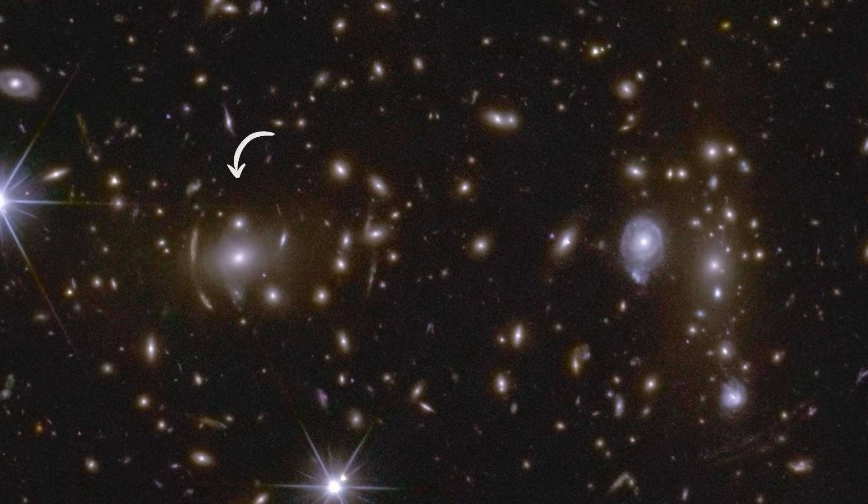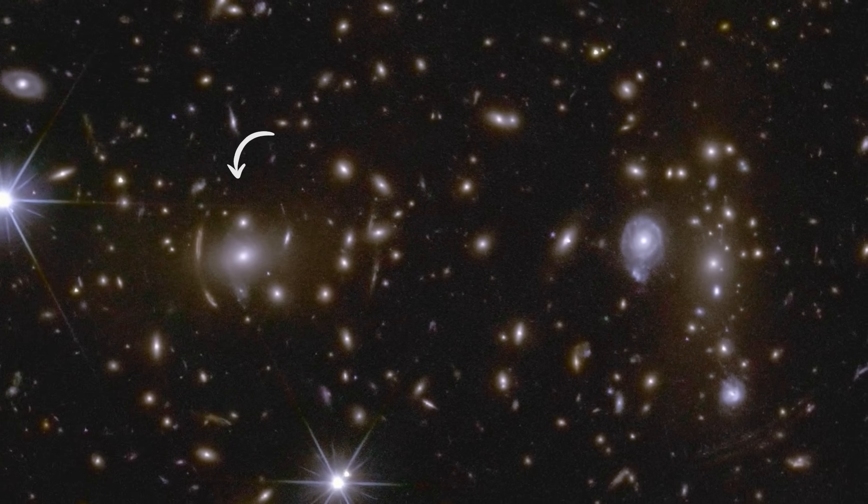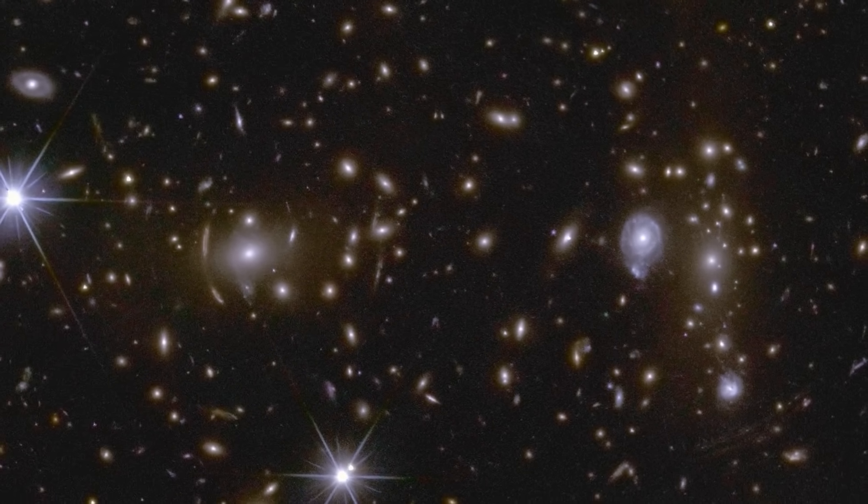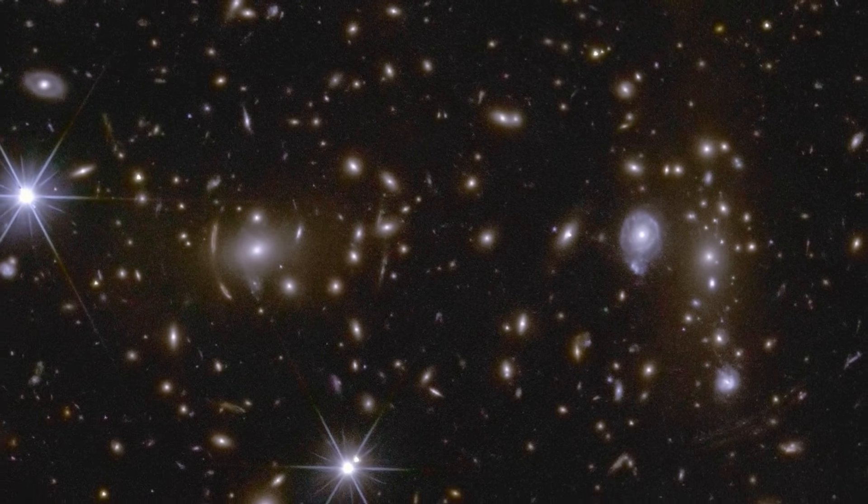If you look closely, you'll notice something fascinating. An object surrounded by arcs of light. This is gravitational lensing.